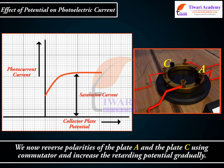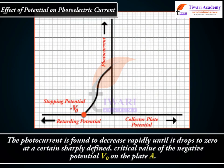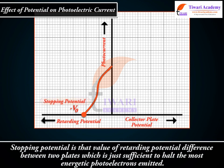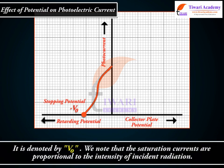We now reverse the polarities of the plate A and the plate C using the commutator and increase the retarding potential gradually. The photocurrent is found to decrease rapidly until it drops to zero at a certain sharply defined critical value of the negative potential, V₀, on the plate A. The negative potential of the plate A at which the photoelectric current becomes zero is called stopping potential or cutoff potential. Stopping potential is that value of retarding potential difference between the two plates which is just sufficient to halt the most energetic photoelectrons emitted. It is denoted by V₀.